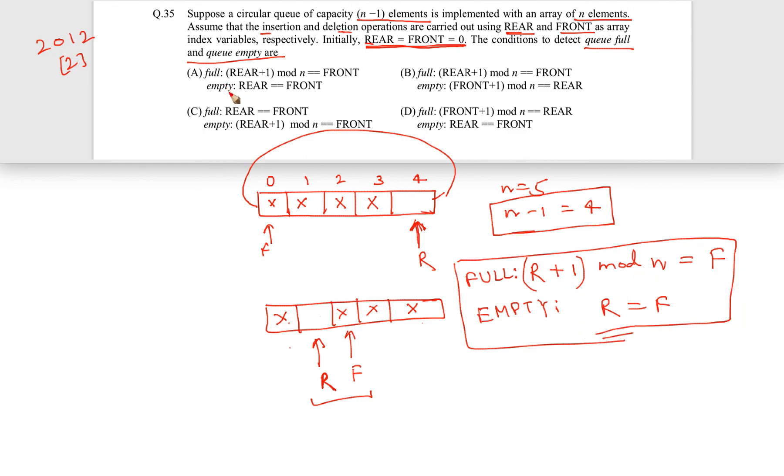Now we can clearly see that empty: rear is equal to front and for full: rear plus 1 mod n is equal to front. So, a is the correct answer.